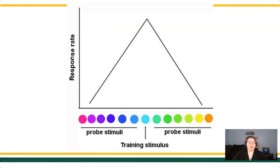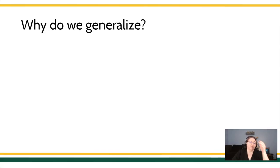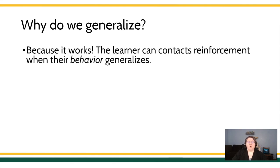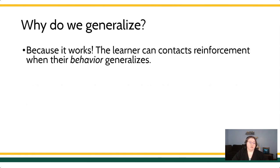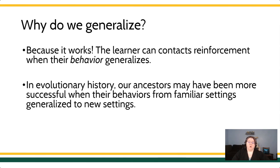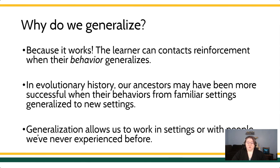Generalization is a very basic feature of all animal behavior. For the most part, we need to have generalization in our repertoire. Could you imagine a world in which we had to learn new skills in every single new environment? We would not be very adaptable creatures. We generalize because it works for us — we can take our behavioral repertoires into new places and actually contact reinforcement. Our ancestors who had repertoires able to generalize were more successful in branching out, finding new places to live, and contacting food and resources. Generalization allows us to work in settings or with people we've never experienced before, making us robust and adaptable.